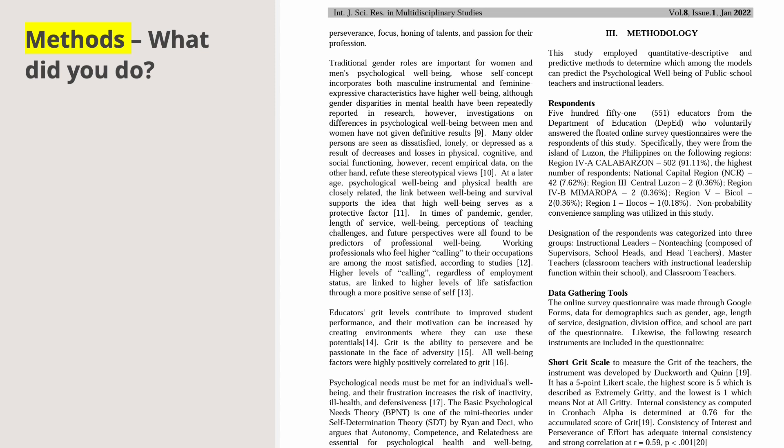Now we'll go to the Methods section, which explains to readers how your study was conducted. There are three important things to remember: first, the design or approach; second, population or sample; third, the research tools or instrument.